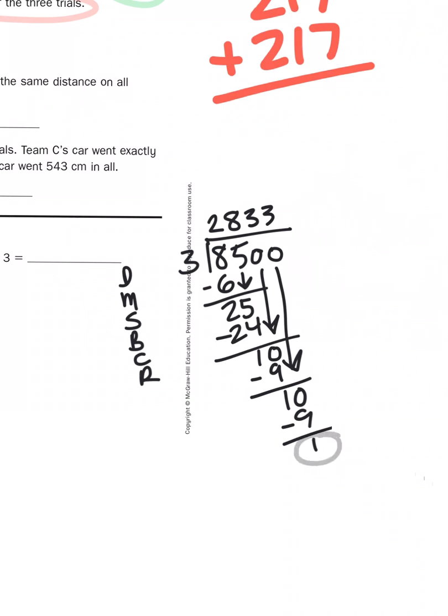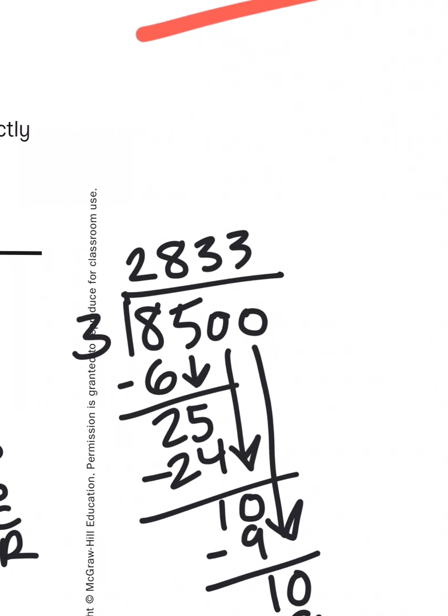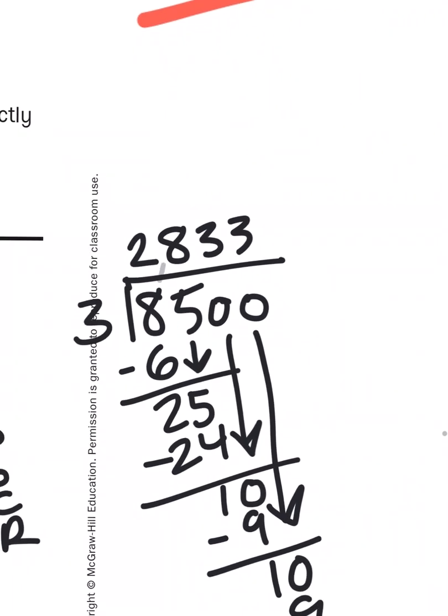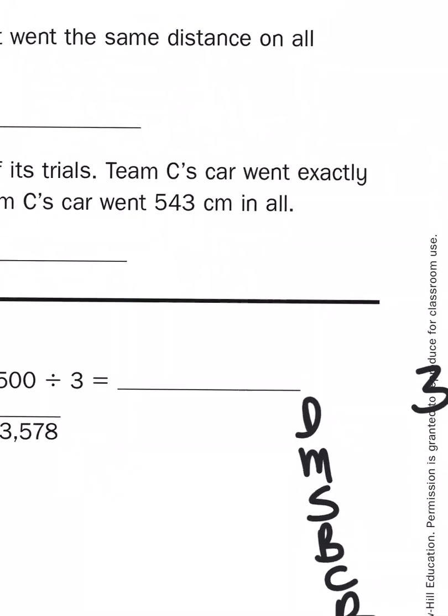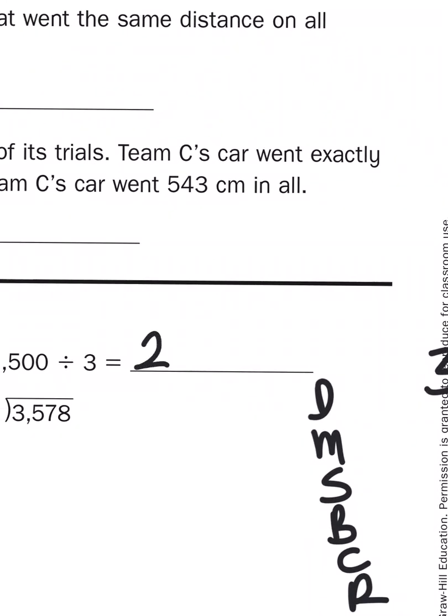Now, I could represent this in one of two ways. I can say 2,833 is my quotient with a remainder of 1, or I could say 2,833 and 1 third. Either way is correct. So, I did have a remainder.